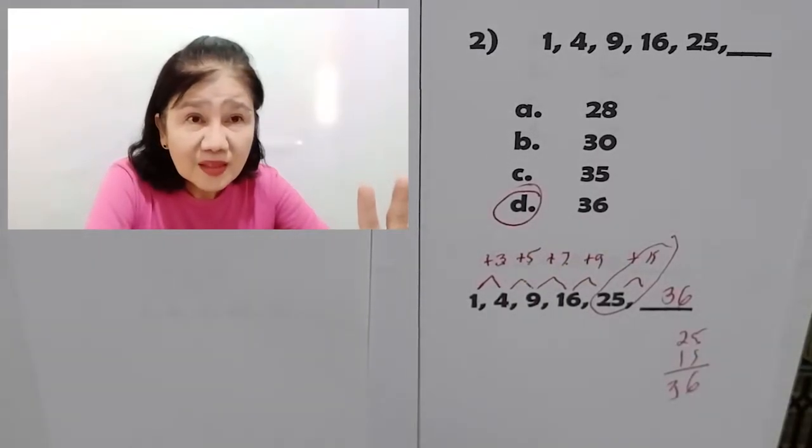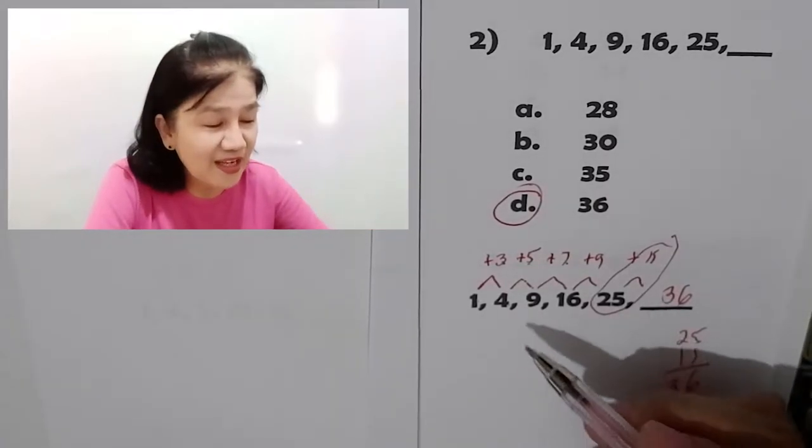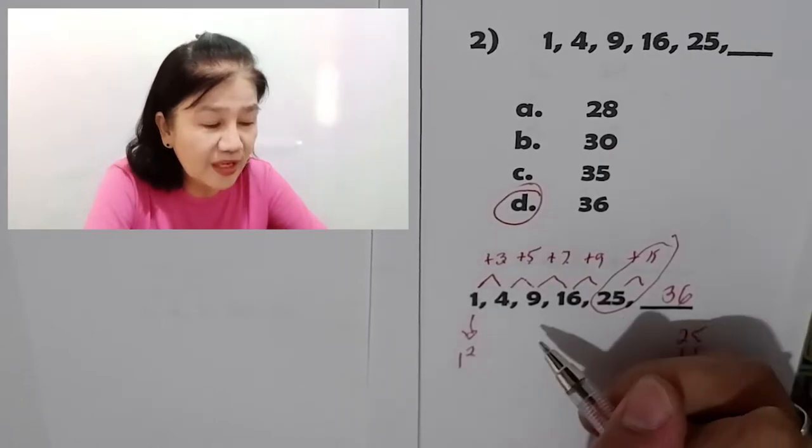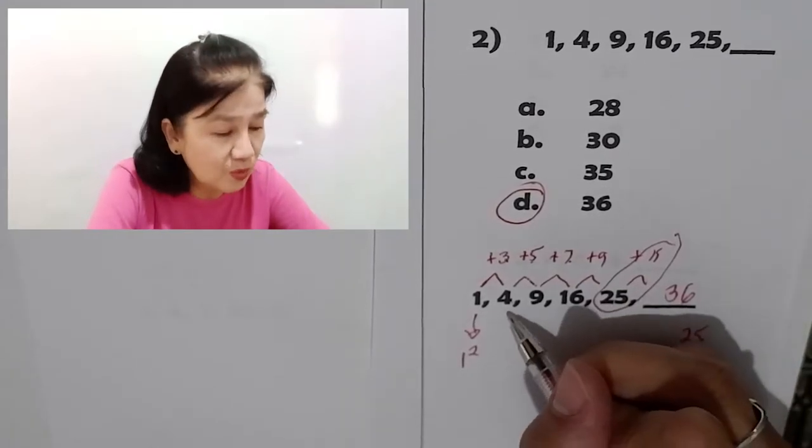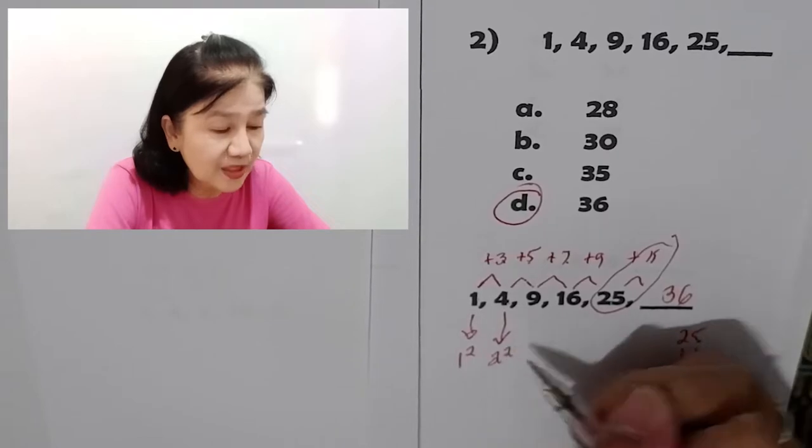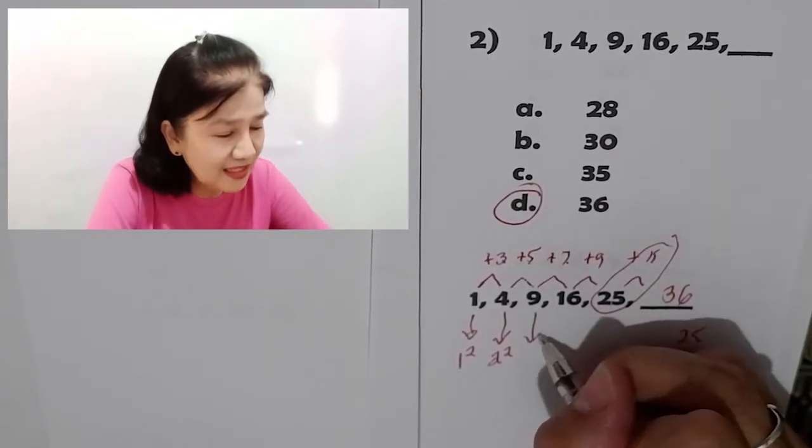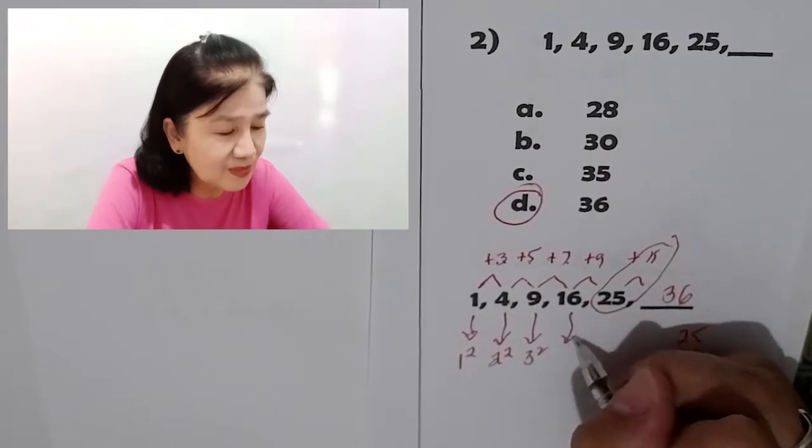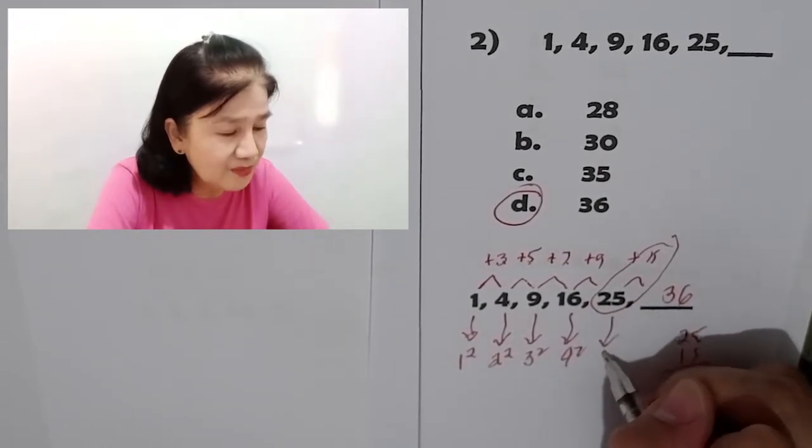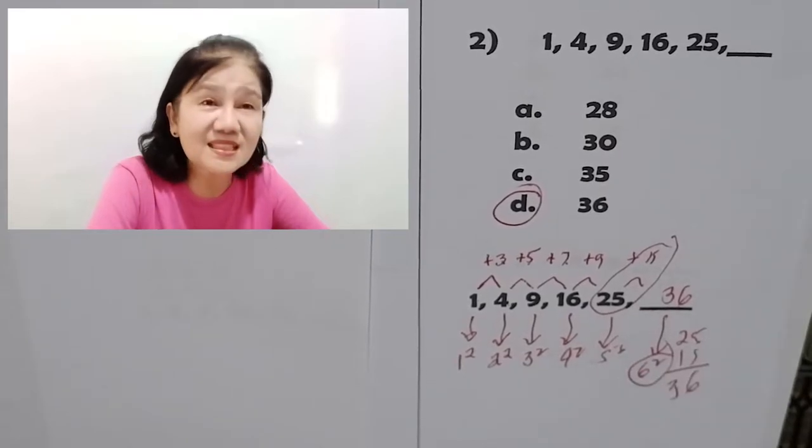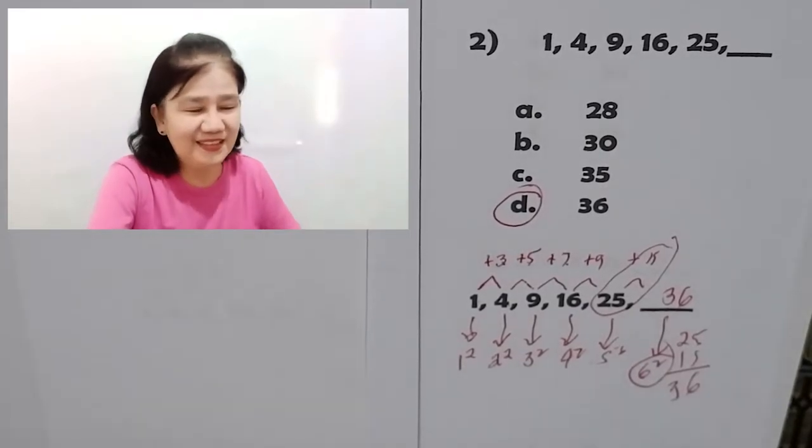Now, there's another way of trying to see a pattern here. Do you see here that 1 is 1 squared? 1 times 1 is 1. 4 is 2 squared. 2 times 2 is 4. 9 is 3 squared. So, this must be 4 squared, 5 squared, and this must be 6 squared. 6 times 6 is 36. That's another pattern for problem number 2.